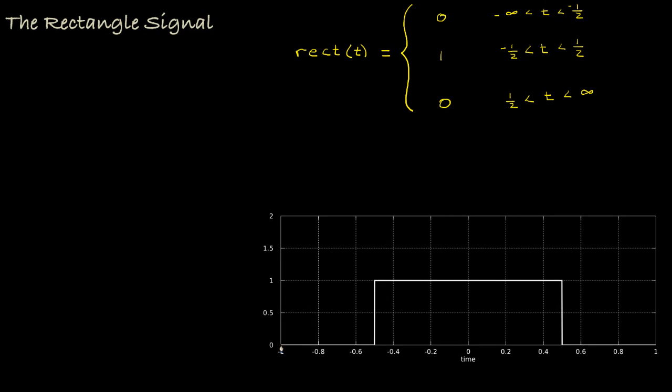For all times that are less than negative one-half, the rectangle function or signal is equal to zero. For times that are in the interval between negative one-half and one-half, the rectangle signal takes a value of one. And for all times that are greater than one-half, the rectangle signal takes a value of zero again.